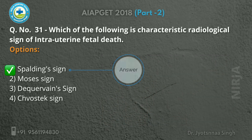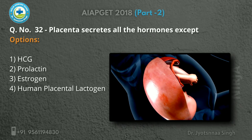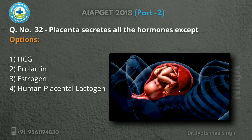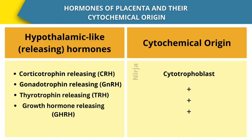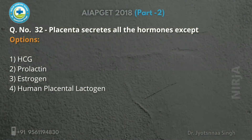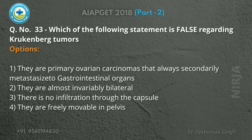Now we can differentiate all the signs, so the correct answer is the Spalding sign. Next question: the placenta secretes all the hormones except which one? The placenta produces a variety of hormones, of which protein and steroid hormones are significantly important. Out of the four options, the placenta secretes HCG, estrogen, and human placental lactogen. The answer will be prolactin.